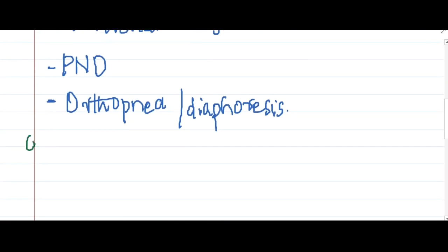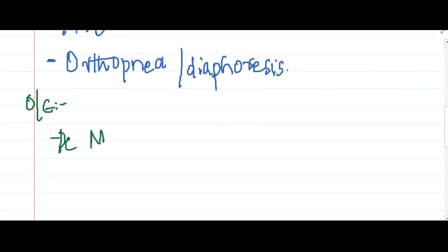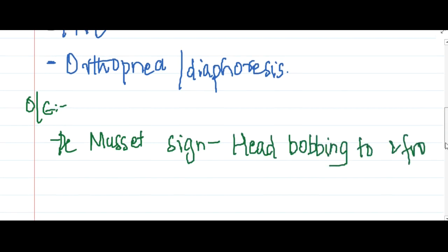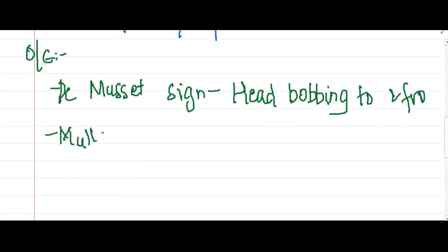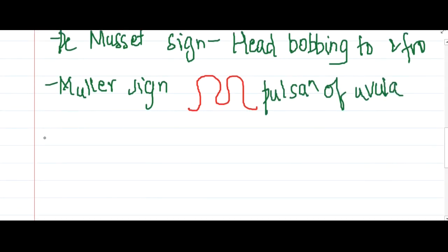On examination, important signs include De Musset sign — head bobbing to and fro. Then there is Muller sign, where pulsations are seen in the uvula. De Musset sign is head bobbing to and fro; Muller sign is pulsations in the uvula.